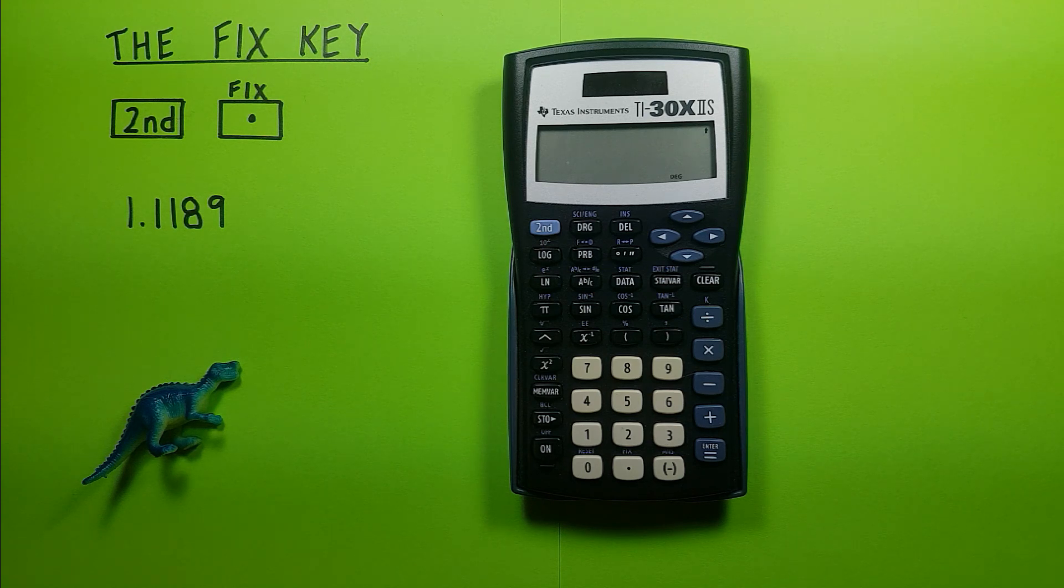Now what the fix key does is allows us to set the number of decimals we want to see in our answer and round it accordingly.